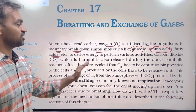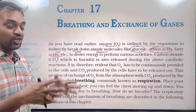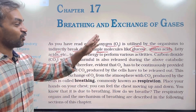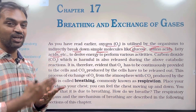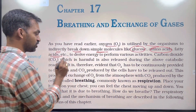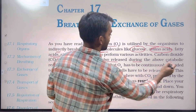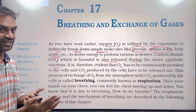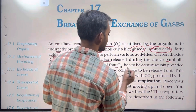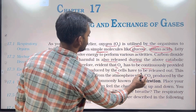Organisms use glucose, amino acids, and fatty acids to derive energy to perform various physiological activities. Carbon dioxide, which is harmful, is also released during the above catabolic reactions — a breakdown process. It is therefore evident that oxygen has to be continuously provided to the cells and carbon dioxide produced by the cells has to be released out.